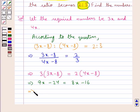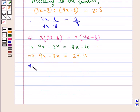Now we will find the value for x. We will transpose 8x to the left hand side and minus 24 to the right hand side. So we have 9x minus 8x equals 24 minus 16. So x equals 8. Thus we get the value for x as 8.